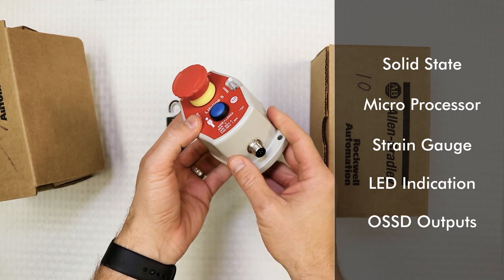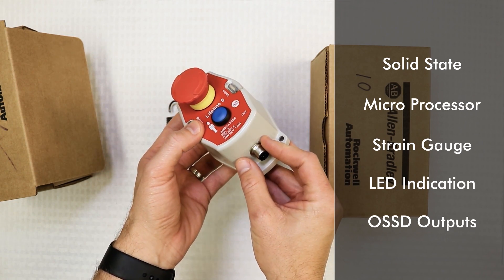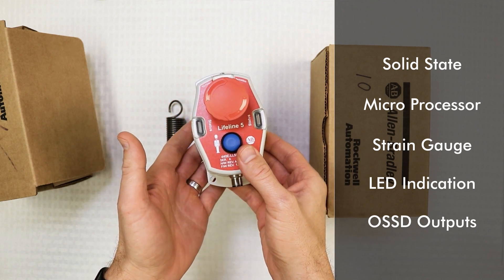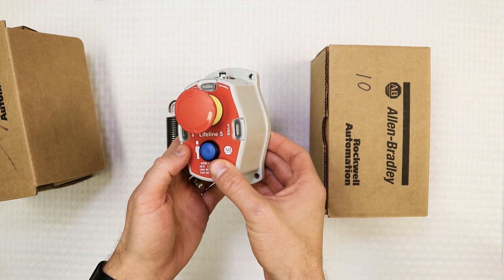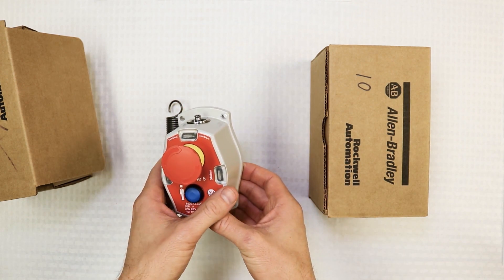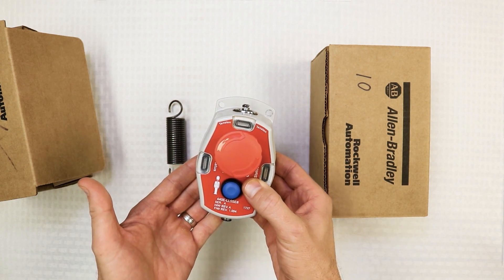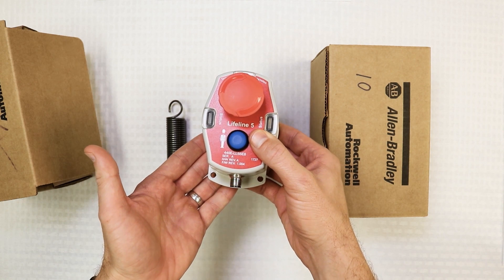It can also be wired in series with other OSSD safety devices such as light curtains and still keep the highest safety levels of PLE Cat 4. Sorry if I just geeked on you, but these advances just enable the Cable Pull to be a smart safety device on the plant floor.